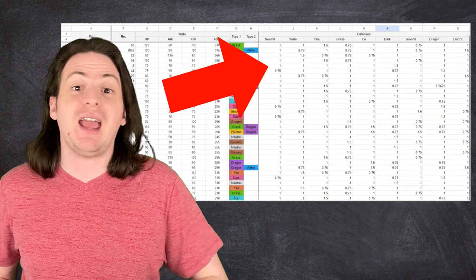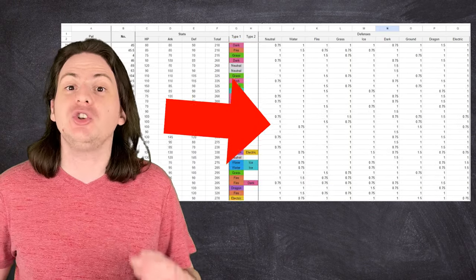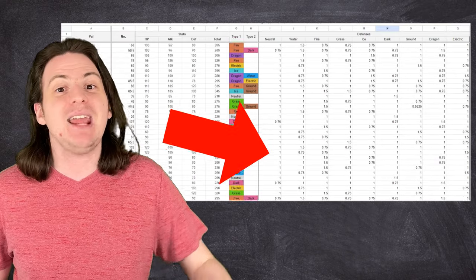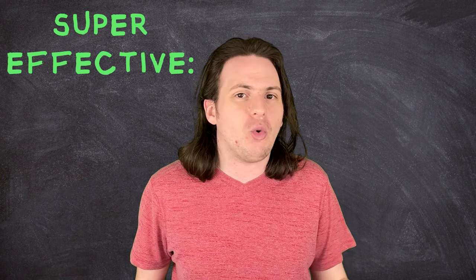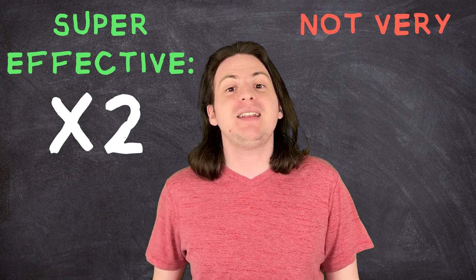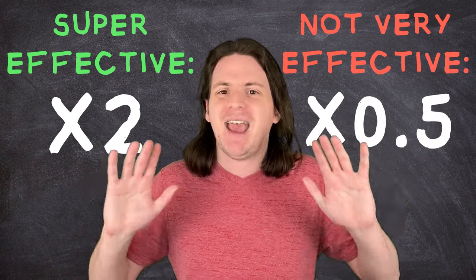So from this, we can easily fill in all the resistances and weaknesses for every PAL, including the 24 dual-typed PALs, and take the sum to find a resistance score. According to most online articles about this game, super effective attacks deal twice as much damage, while resisted attacks deal half as much. So, just like Pokemon, nice and simple.